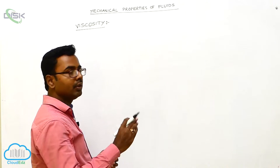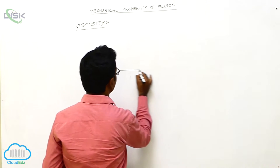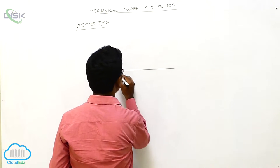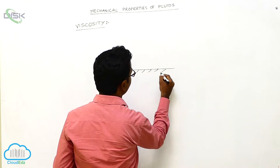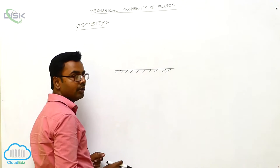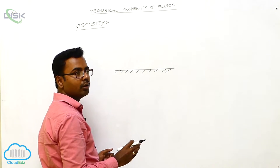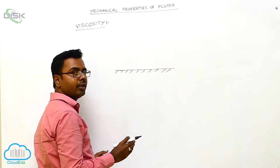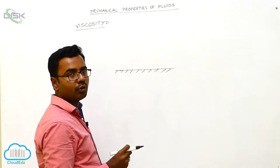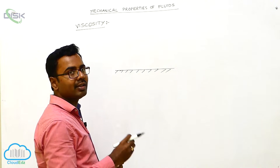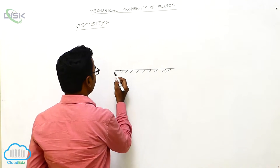Suppose a fluid is flowing over a surface. As the fluid is flowing, there will be viscous drag or viscous force between two adjacent layers. Let us draw the layers.